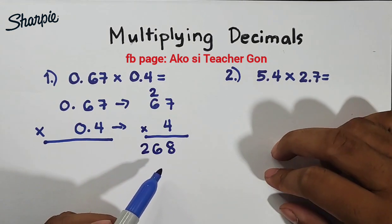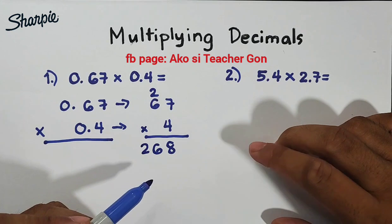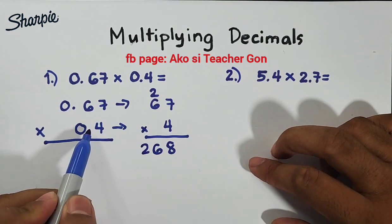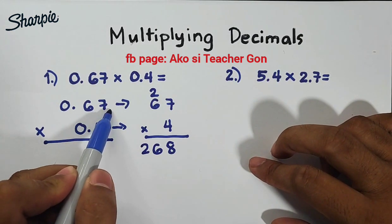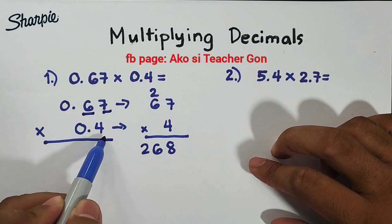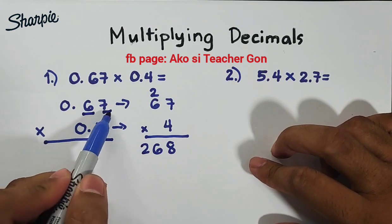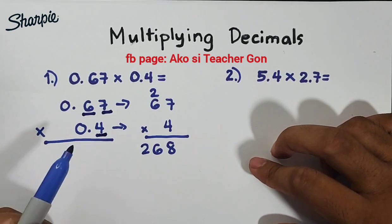What we need here is to count the number of decimal values or decimal places from the original decimals. So we will count 1, 2, and then 3. So again we have three decimal places: 1, 2, and 3.